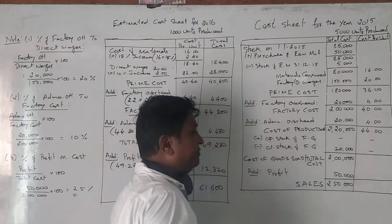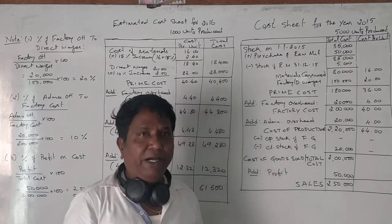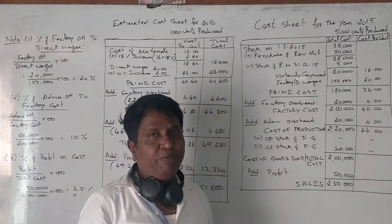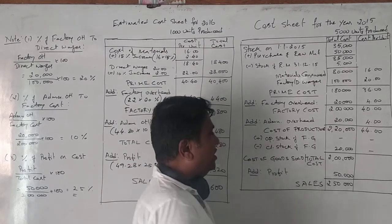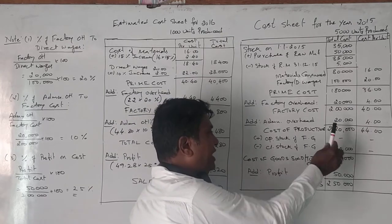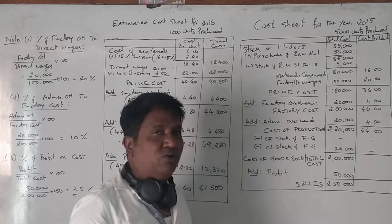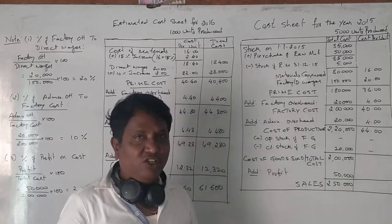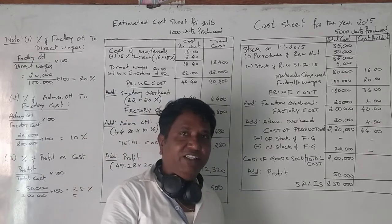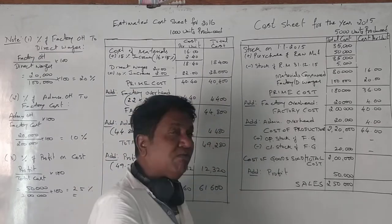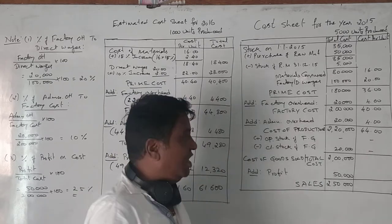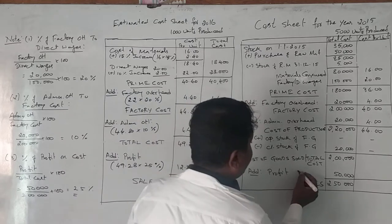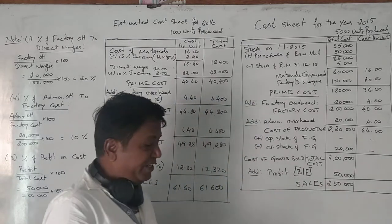To the cost of production, we should add opening stock of finished goods. However, there is no opening stock given in the 2015 data. What is given is a closing stock of finished goods of 20,000. So from 2,20,000 minus closing stock of finished goods of 20,000 we get the cost of goods sold. Since selling and distribution overhead is not given, this becomes total cost of 2,00,000. Sales is given as 2,50,000, so profit is 50,000 rupees.